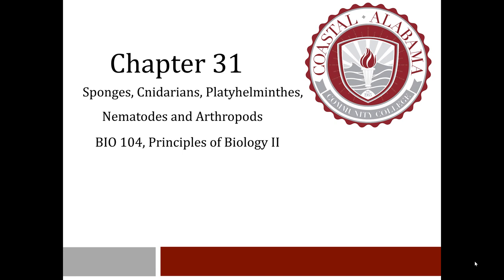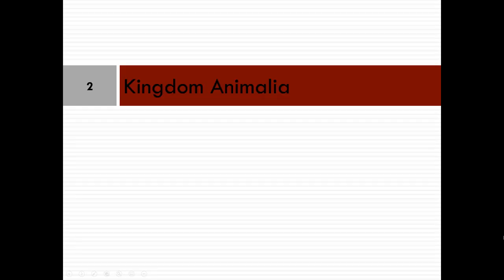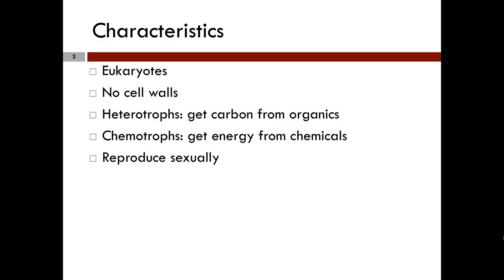If you look in your textbook on page 641, you will see the Sally Lightfoot Crab — an example of the diverse animals among the Bilateria. The remarkable success of bilateral animals can be attributed to the evolution of adaptations including facilitated food capture, escape from predators, and reproduction.